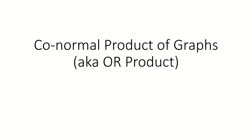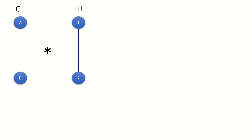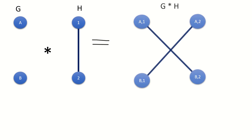The conormal product of graphs is an operation on graphs that takes as its input two undirected simple graphs G and H, and outputs a new undirected simple graph known as the conormal product of G and H.